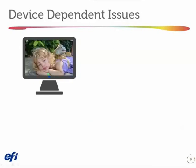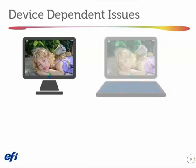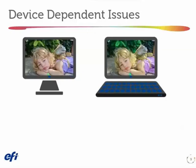The next topic is device dependency. Both RGB and CMYK color models are device dependent, meaning the appearance of these colors depends on the device with which we capture or display them. For example, if you go into an electronics store and look at a row of 25 TVs all broadcasting the same channel, the colors look different from one screen to another — that's device dependency.